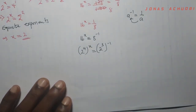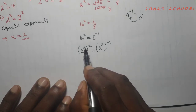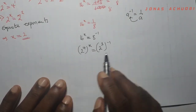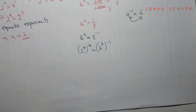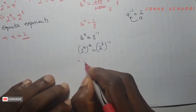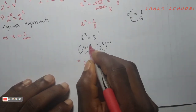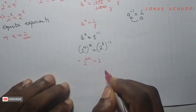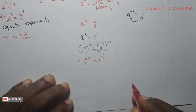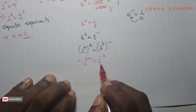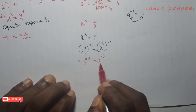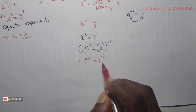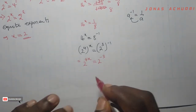I can write 16 as 2 raised to the power 4 with x outside, and 8 as 2 raised to the power 3 with minus 1 outside. From the laws of indices, if we have a power in the bracket and another outside the bracket, we multiply both powers. So this gives us 2 raised to the power 4x equal to 2 raised to the power negative 3. Now I have the same base on both sides.